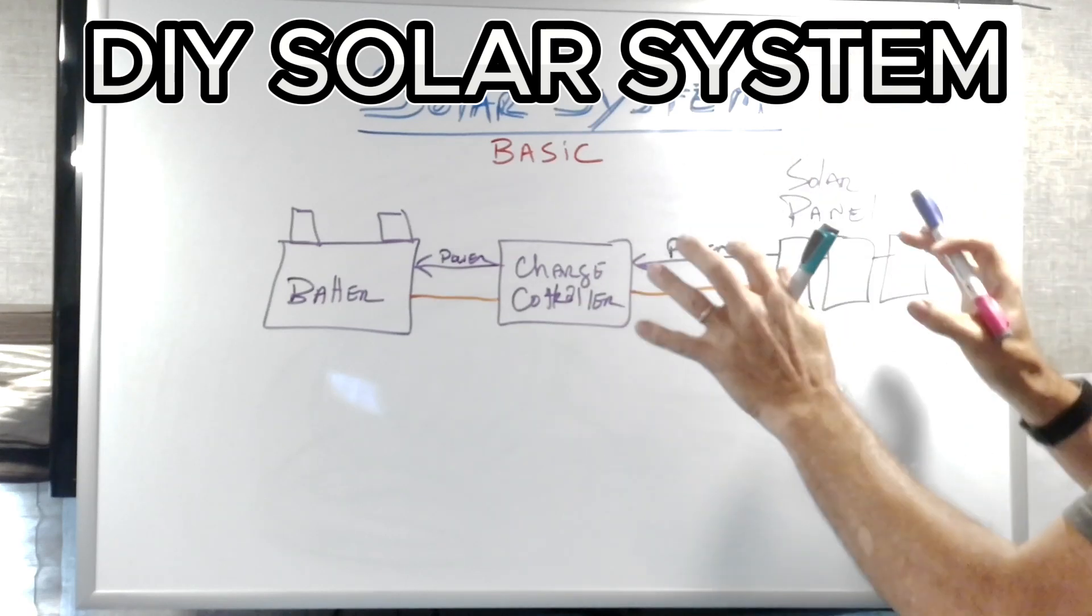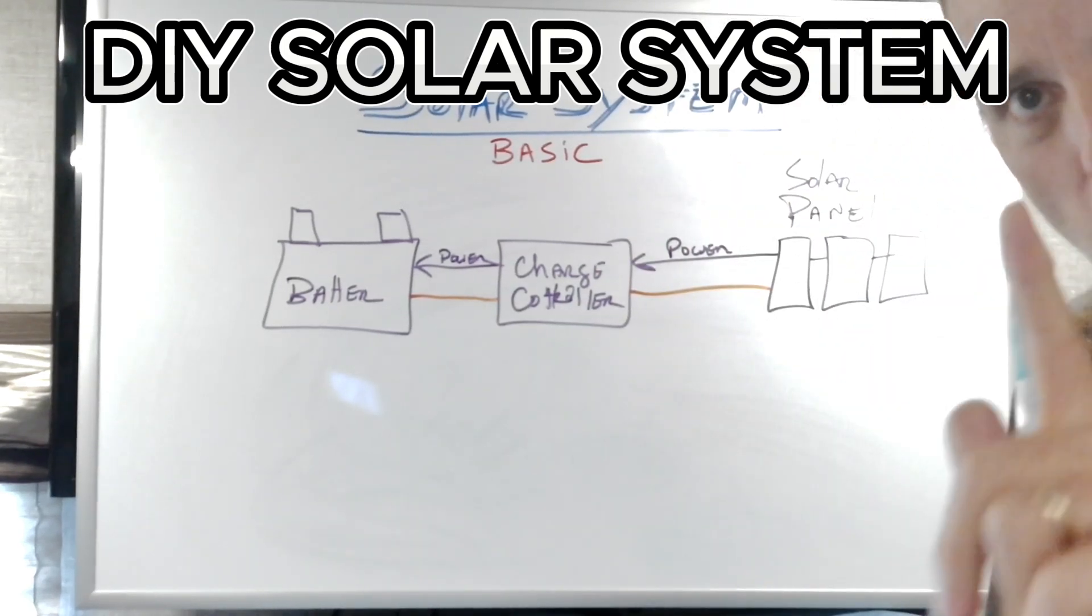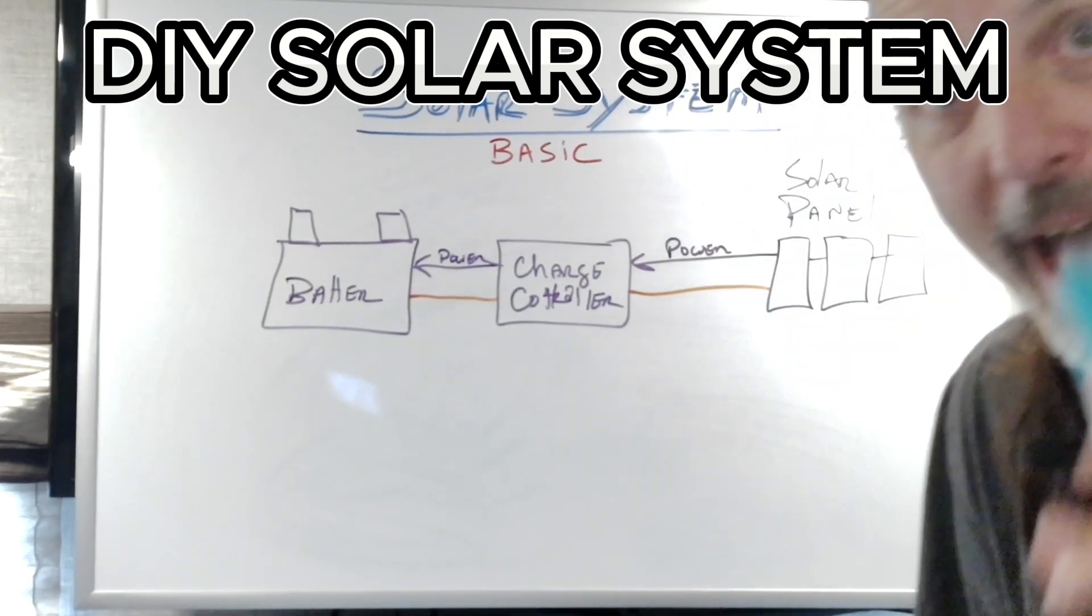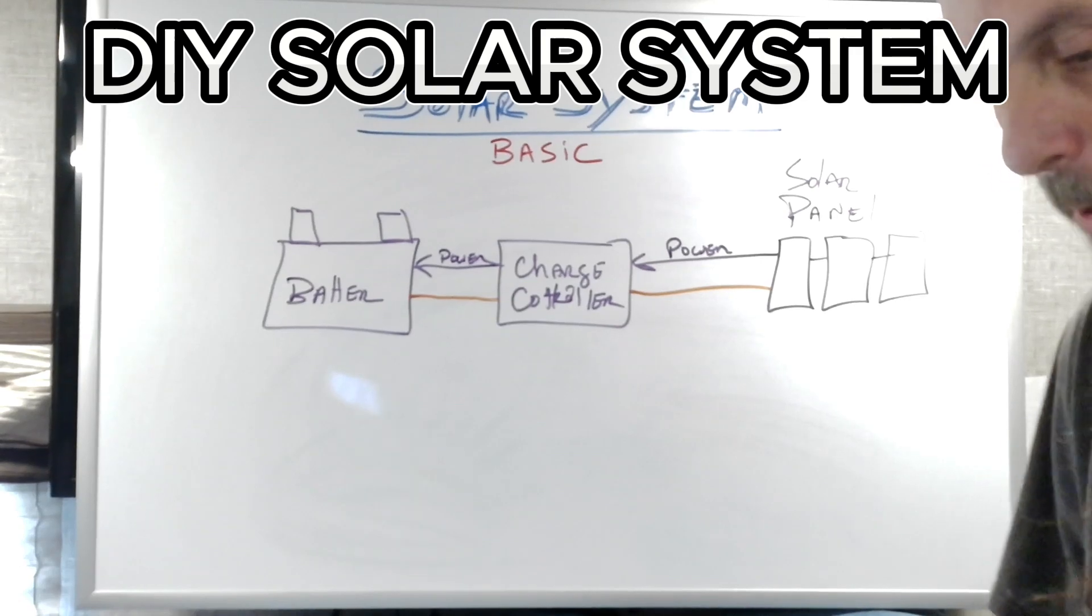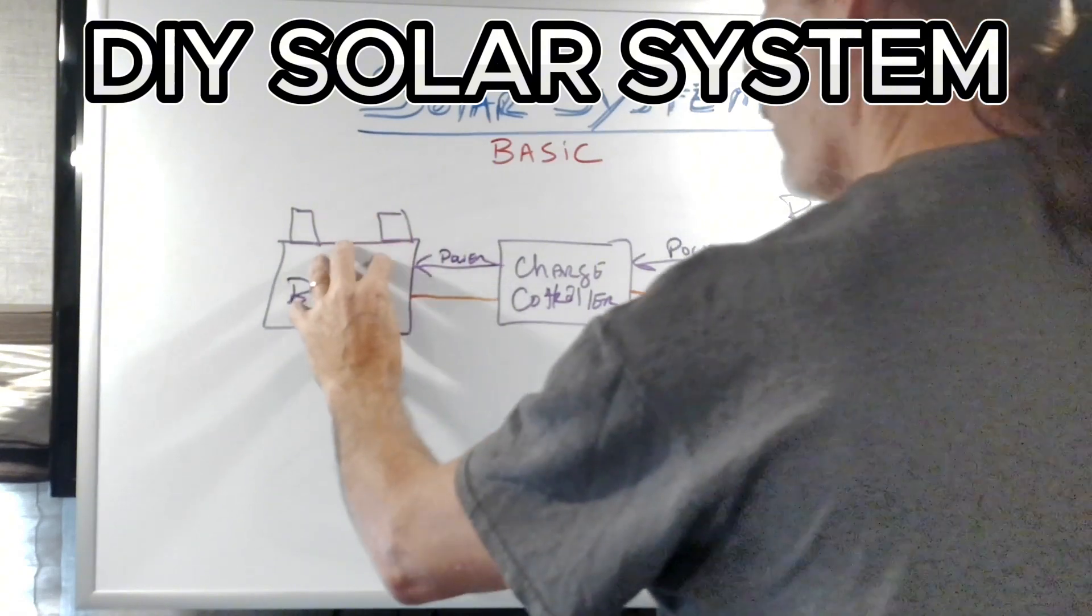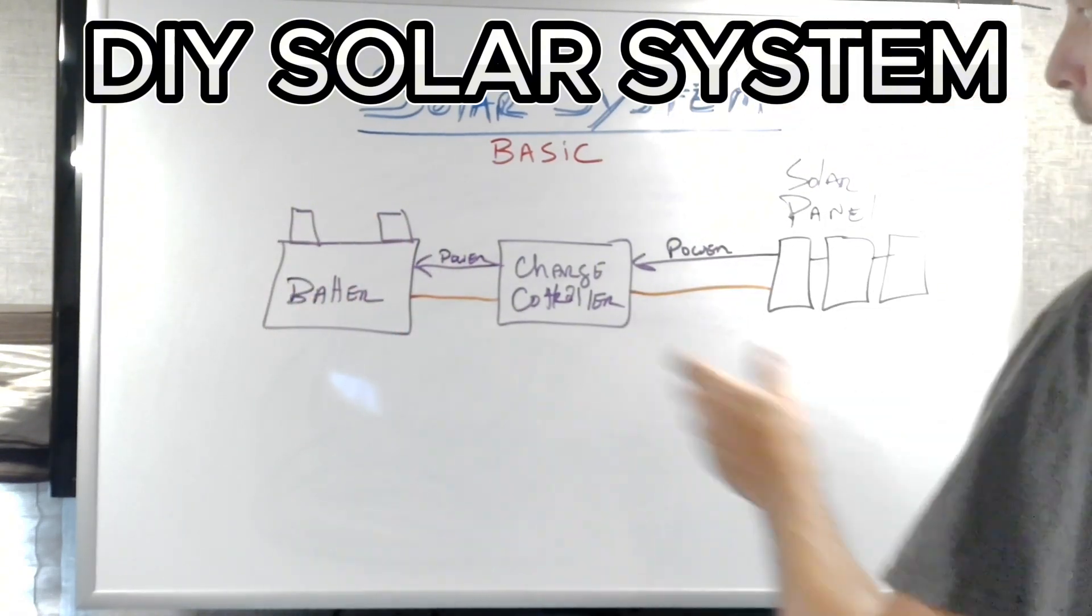Believe it or not, that is the very beginning of your solar system. You need one more item in order to make sure that you can get the power out of this. That is what we call an inverter. An inverter inverts the power from the battery and makes it AC power.